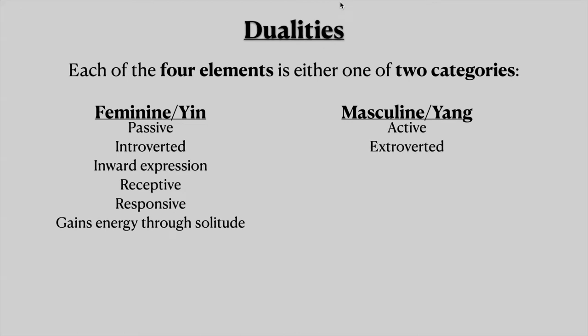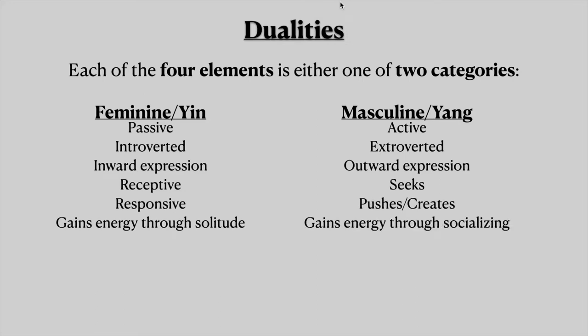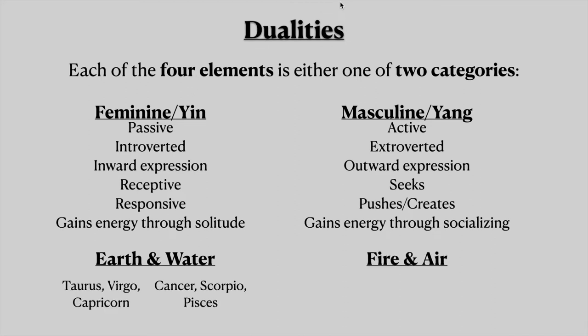Masculine energy is active, extroverted, outward expression. This energy seeks, pushes, and creates, and gains energy through socializing. The feminine elements are earth and water and the masculine elements are fire and air. So this does not mean female and male — this is the energy that it is giving off. In earth and water's case, it's going to be a more passive, receptive energy, and for fire and air, it's going to be more masculine, which is active and extroverted.